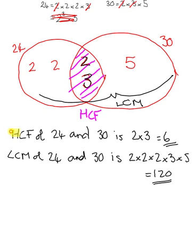Just to recap, the highest common factor of 24 and 30 is 2 times 3. So the highest common factor is 6. And the lowest common multiple is going to be 2 times 2 times 2 times 3 times 5, which equals 120.